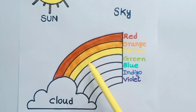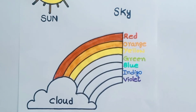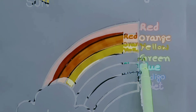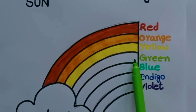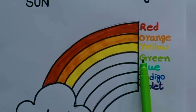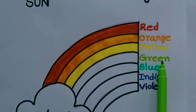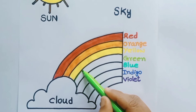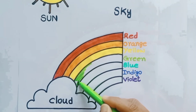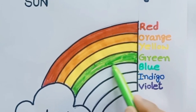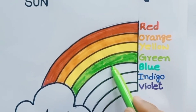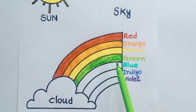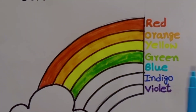The third arc of the rainbow is colored in yellow. What is the third color of the rainbow? It is yellow. Next children, read the next color — G-R-E-E-N, green. Shall we color it in green? Yes, let us start. The fourth color of the rainbow is green.